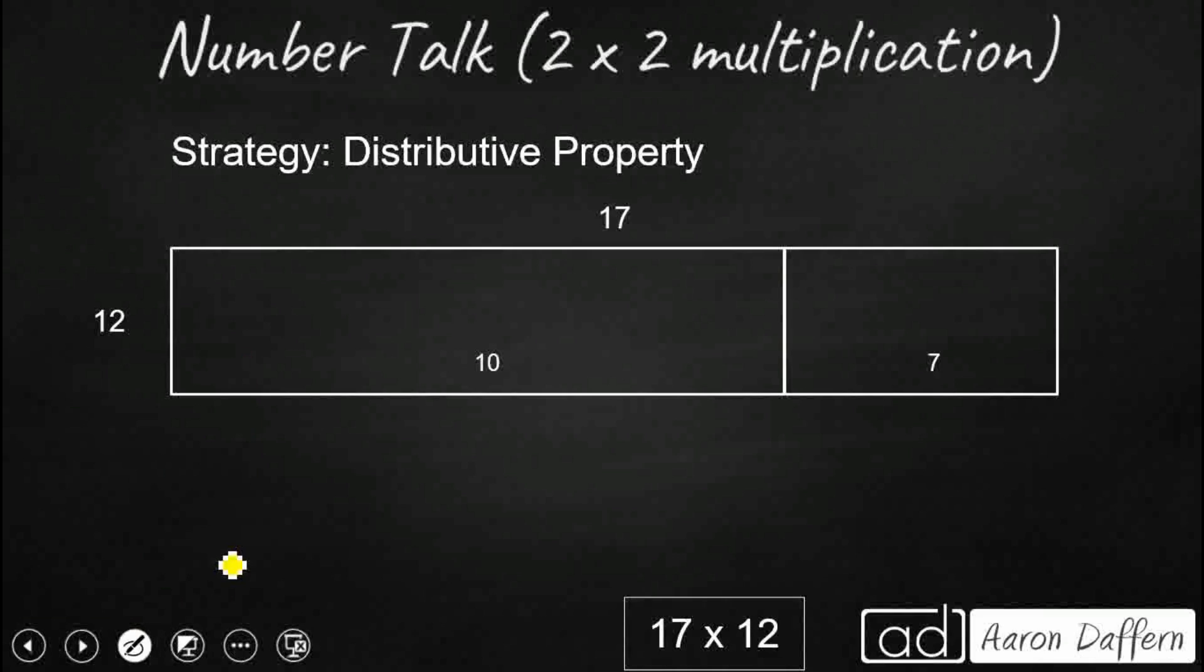So if we wanted to figure out 17 times 12, one of the first things we could have done is to use the distributive property. Now the distributive property is our breaking apart property. So if we wanted to break apart one of our factors, let's break apart this 17 and let's break it apart like we're looking at it in expanded form. So it's really a 10 plus 7.